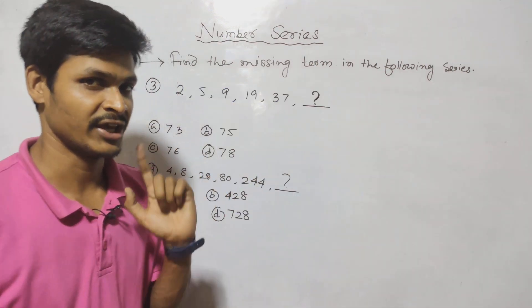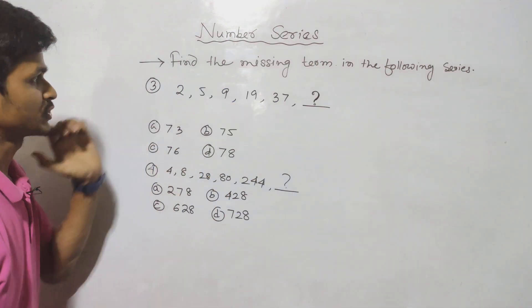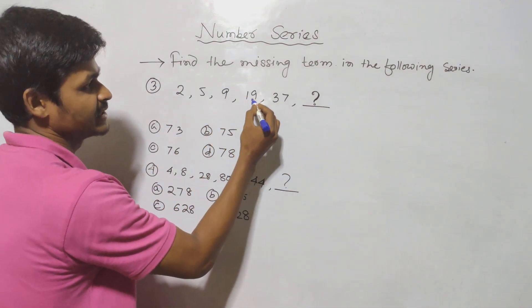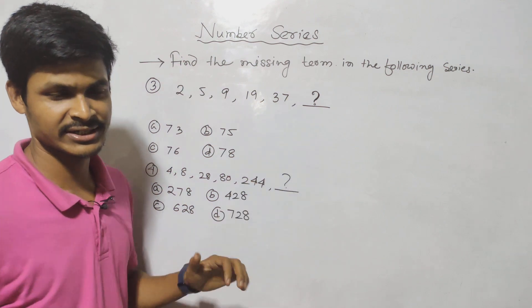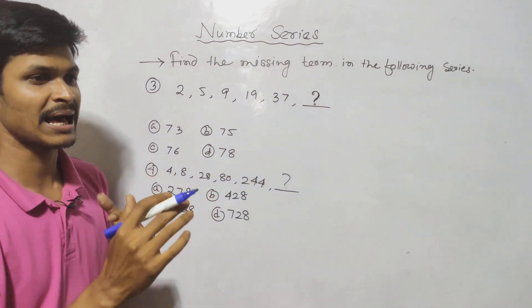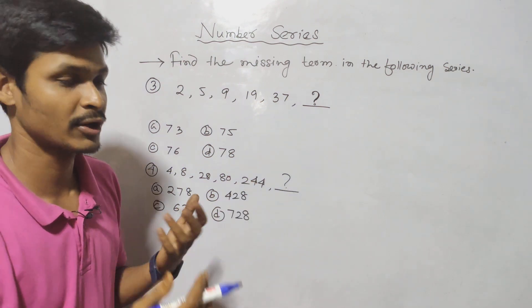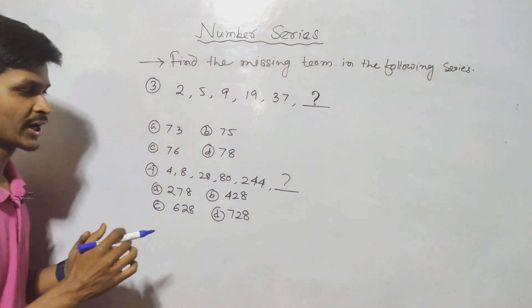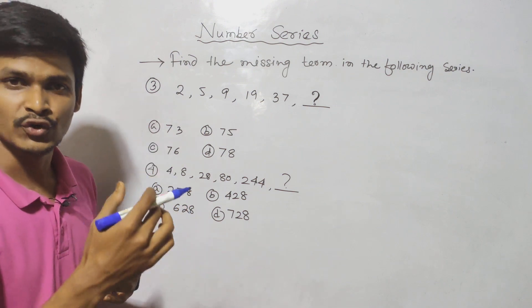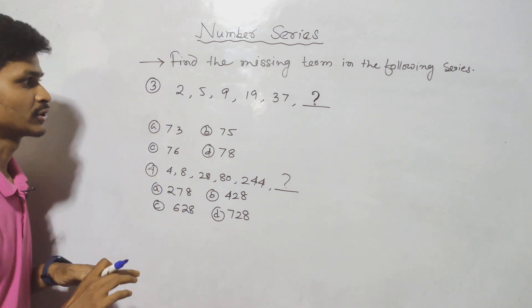Question number 3. The series is: 2, 5, 9, 19, 37. We have to determine whether to use plus, minus, multiply. We need to check square, cube, and multiply.